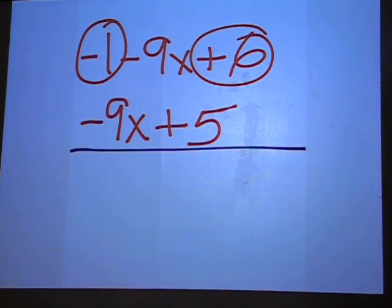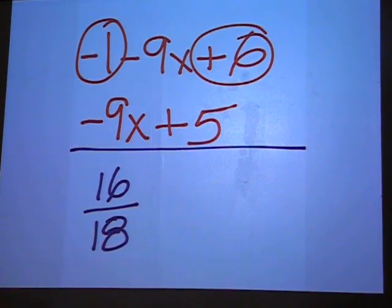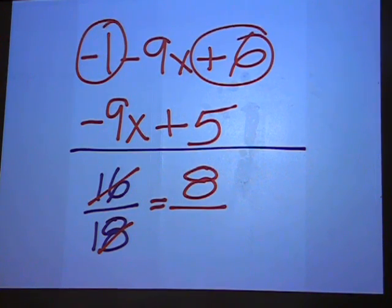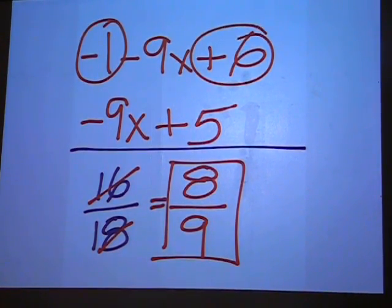Also, at the bottom of this page, if you have something like 16 over 18, don't leave a fraction unreduced. Both of those are even numbers. And 2 will go into 16 eight times and into 18 nine times, leaving you with 8 over 9 for a final answer.